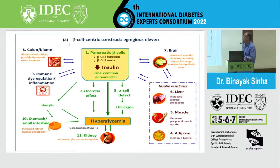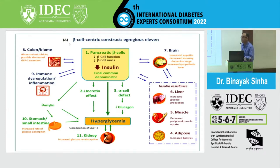There is a failure of beta cell function, hyperglycemia, and an incretin and alpha cell defect. In addition, there are problems with insulin resistance in the liver, the muscle, and adipose tissue. More and more, we are finding problems with the colon, with the gut microbiome, immune dysregulation, problems with the stomach and small intestine, and also problems in the brain. All these things are conspiring together to lead to diabetes.